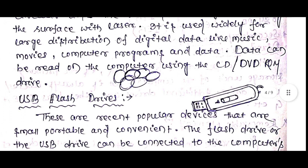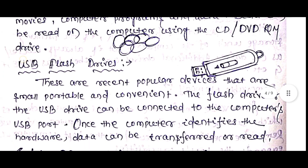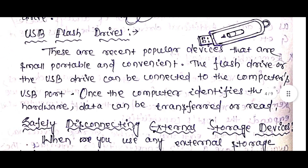Data can be read on the computer using CD/DVD ROM devices. You can also use USB flash devices. Once the computer identifies the hardware, data can be transferred or read.